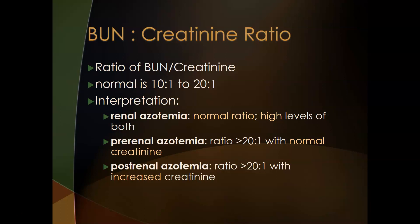With post-renal azotemia, the ratio can also be greater than 20:1, but creatinine is also increased. Post-renal azotemia is caused by obstruction of urine flow due to a stone or tumor, which can be determined by imaging. Those are the interpretations of the BUN:creatinine ratio, and that concludes this video.